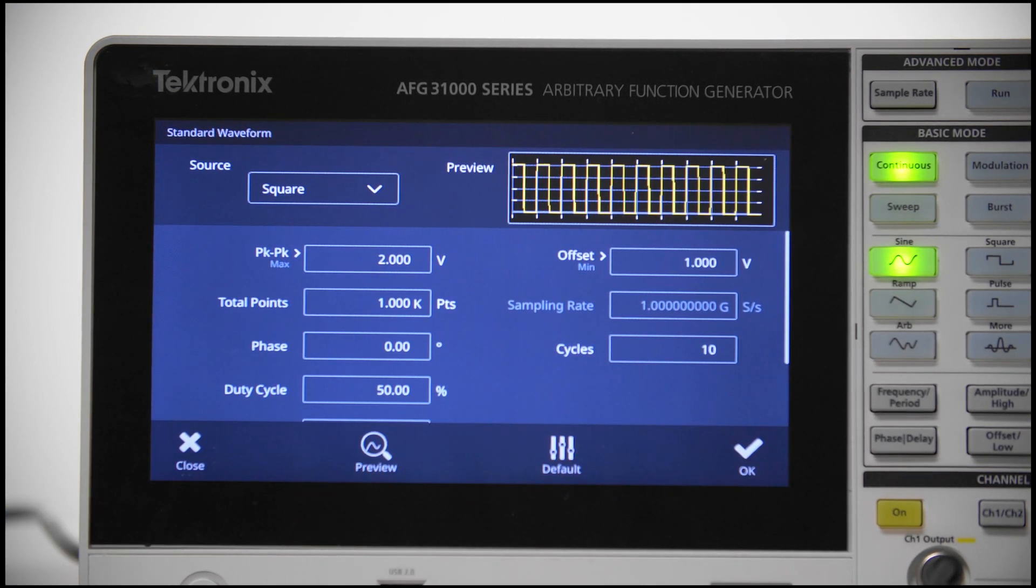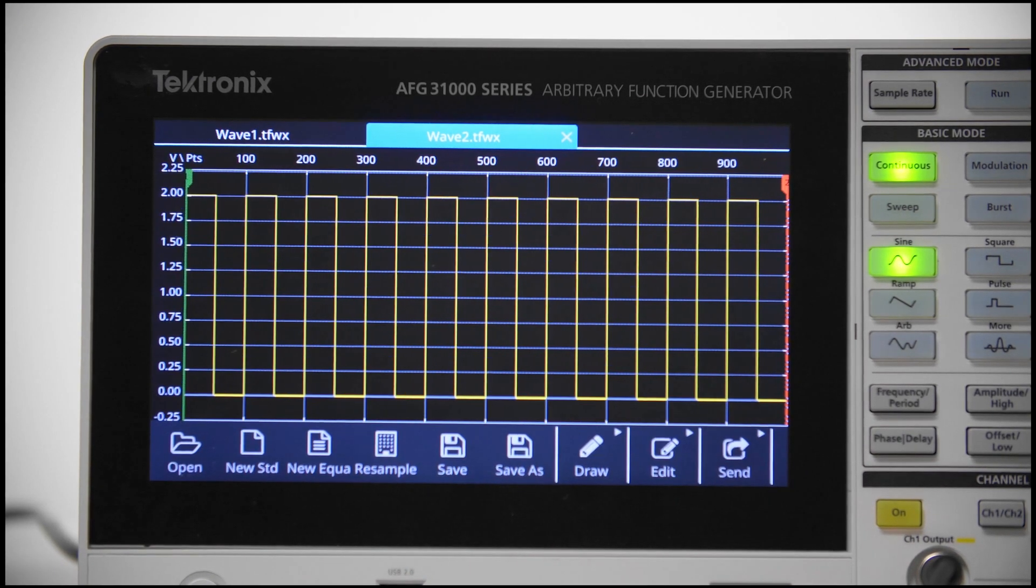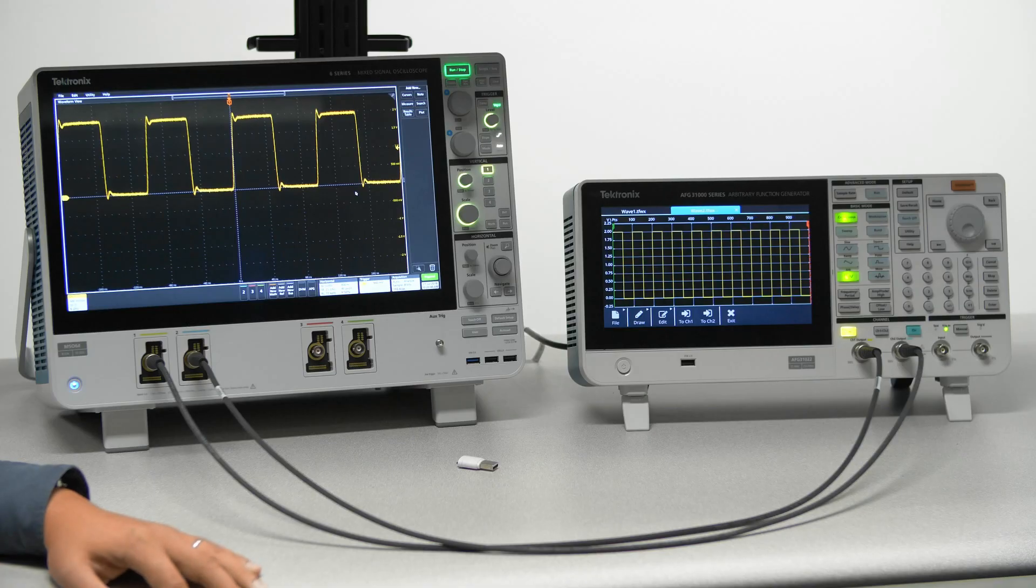I can preview my waveform and then if I'm happy, I'll press OK. I can quickly send the new waveform to channel 1 and see the waveform on the scope.